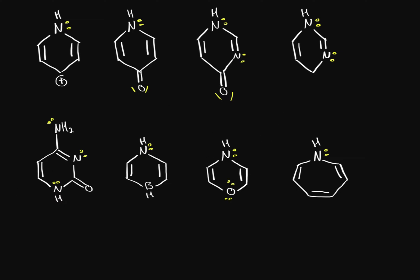Now let's see if they will be used for resonance stabilization. In this first structure, we have four electrons in this ring. All atoms are sp2 hybridized except for the nitrogen right now. If this lone pair is donated for resonance stabilization — forming a double bond there and a double bond there — then we'll have six pi electrons in this structure and it will be aromatic. So this is preferred, and therefore this lone pair will not be used for being a base. This nitrogen is not basic.